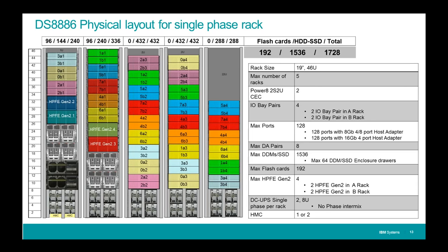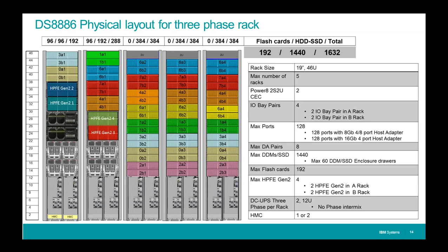On the DS8884, one high-performance flash enclosure goes into the base frame and the second goes into the second frame — 48 drives each, for a total of 96 flash cards. For the DS8886 single-phase power version, I can have four of these enclosures for a total of 192 flash cards. I can also put 1,536 either hard drives or solid-state drives in the traditional form factor into the system. For the three-phase rack, I still have 192 flash cards in the Gen 2 drawers, but I'm limited to 1,440 hard drives or solid-state drives due to the slightly larger power subsystem.